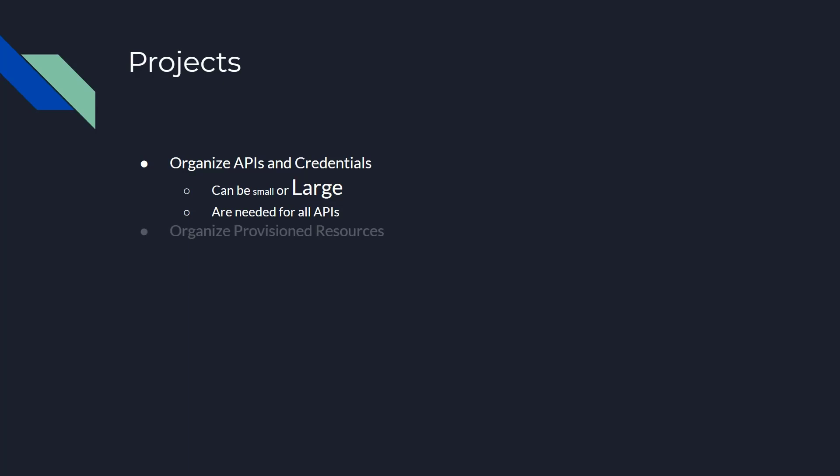All provisioned resources sit underneath a project. So if you create a server, it sits underneath the project organizational structure. Some provisioned resources we'll be looking at are compute resources such as a virtual machine or a networking layer. Data resources such as Cloud SQL or Cloud Datastore — the SQL and NoSQL options inside Google Cloud. Additionally, there are tools like Cloud Spanner and Bigtable, which encompass multi-terabyte functions. Storage resources such as a bucket used to retain files.